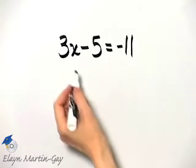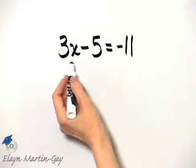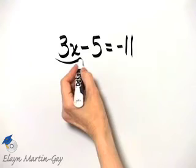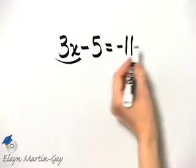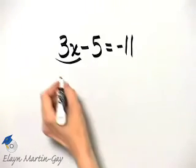Now we want to get any variable terms—and this is the only term with a variable in it—by itself on one side of the equation. So I will add 5 to both sides of the equation.